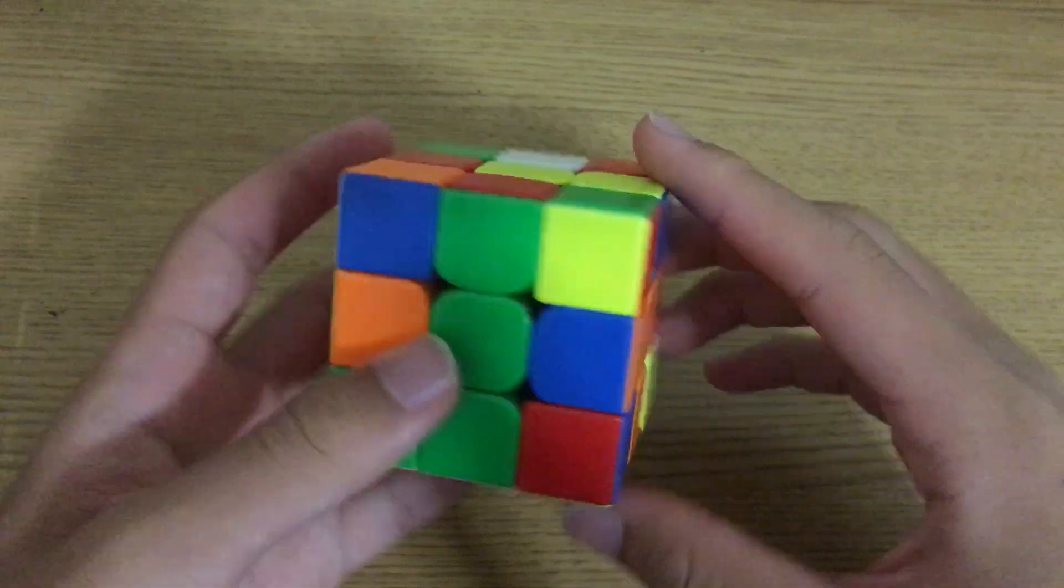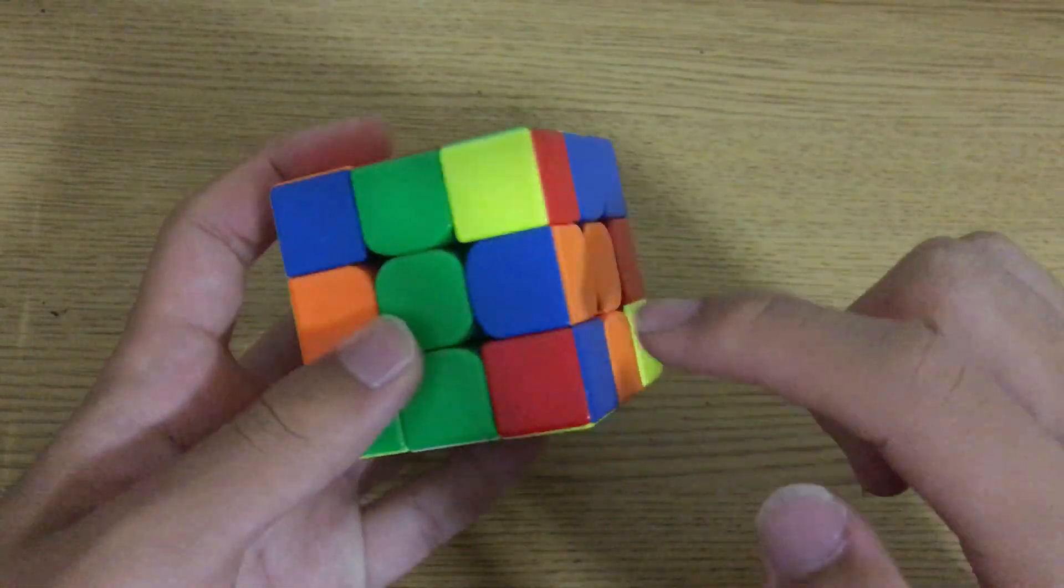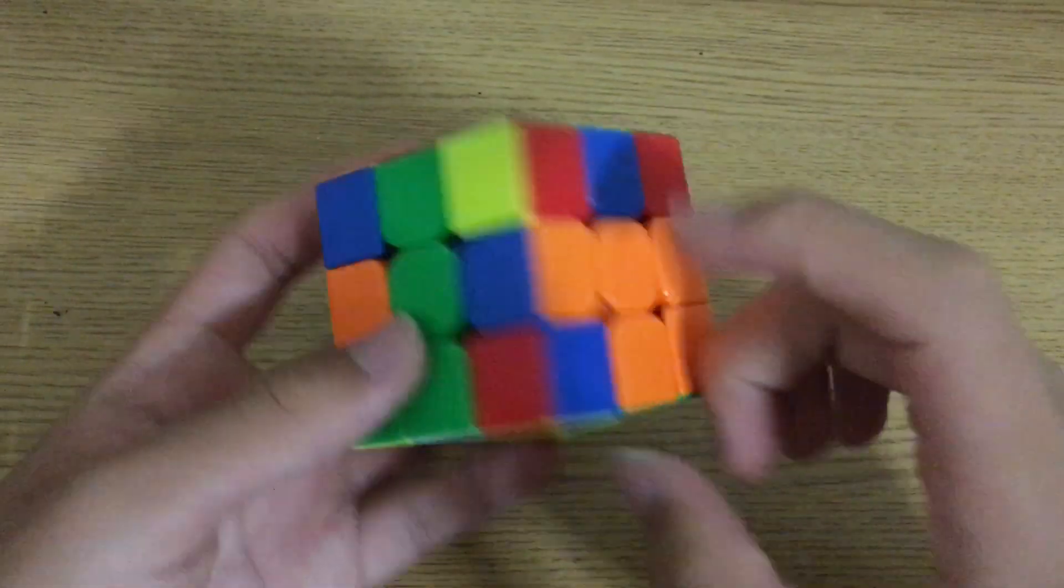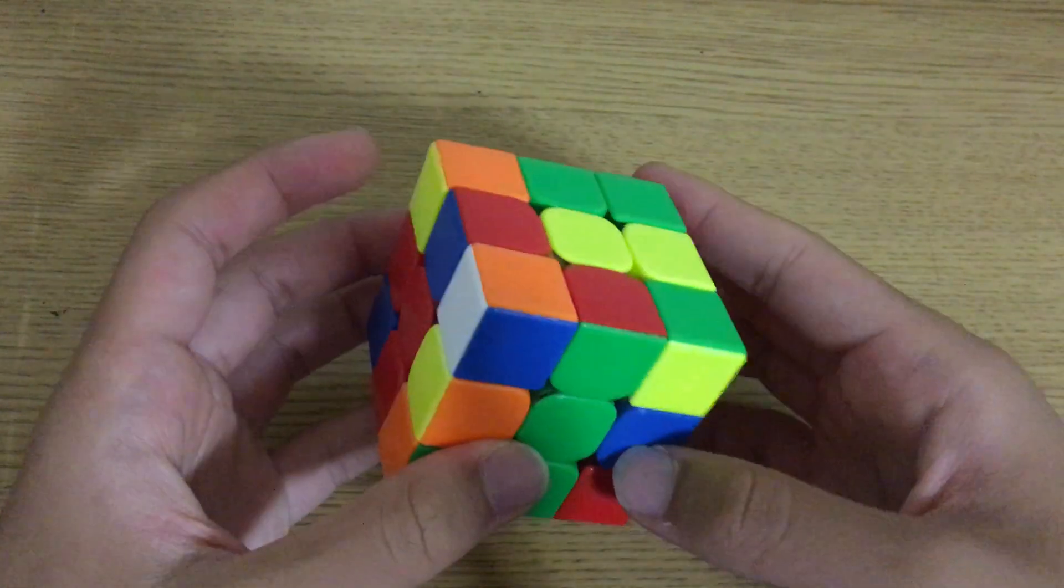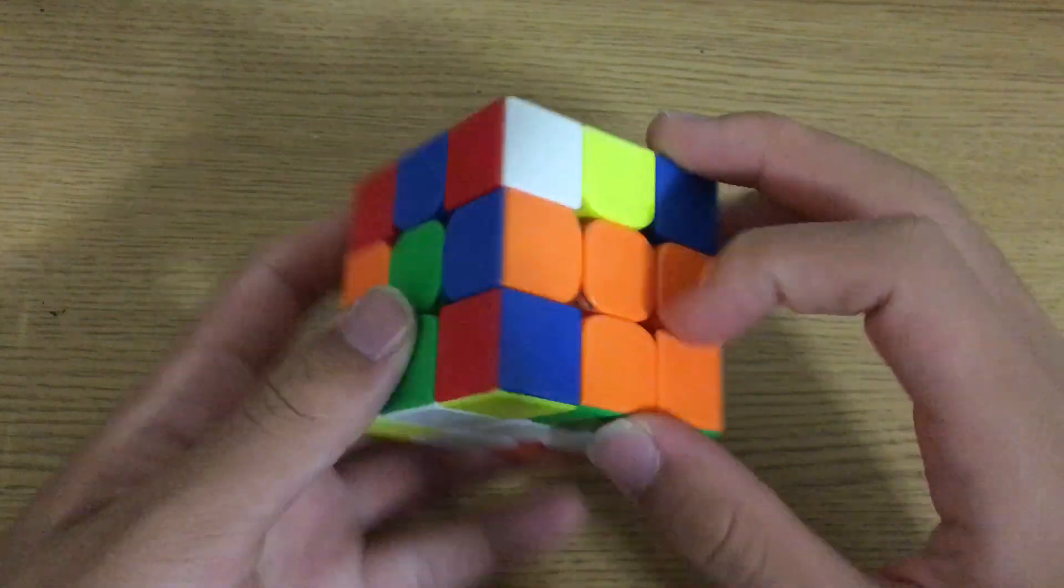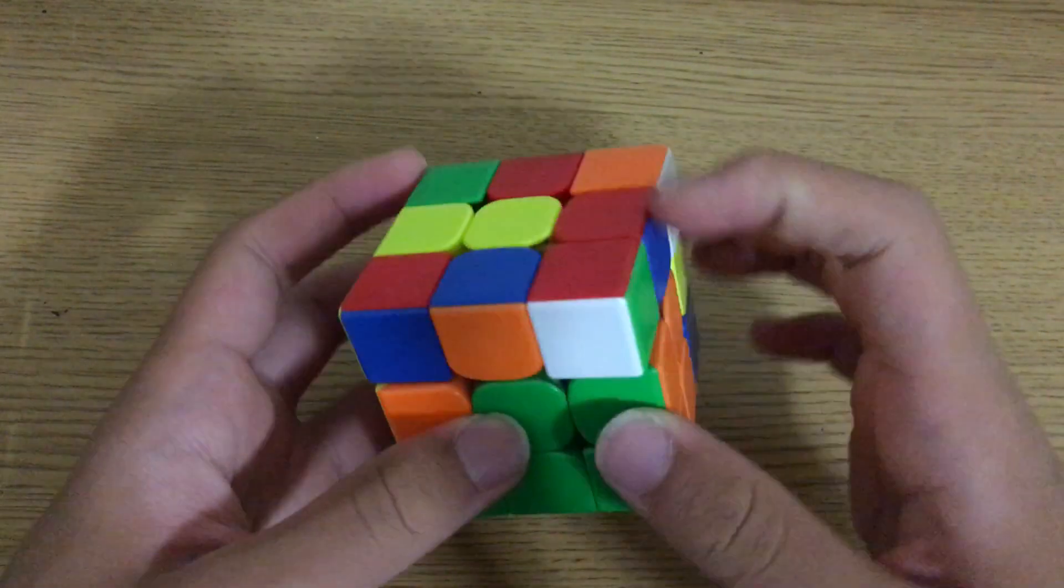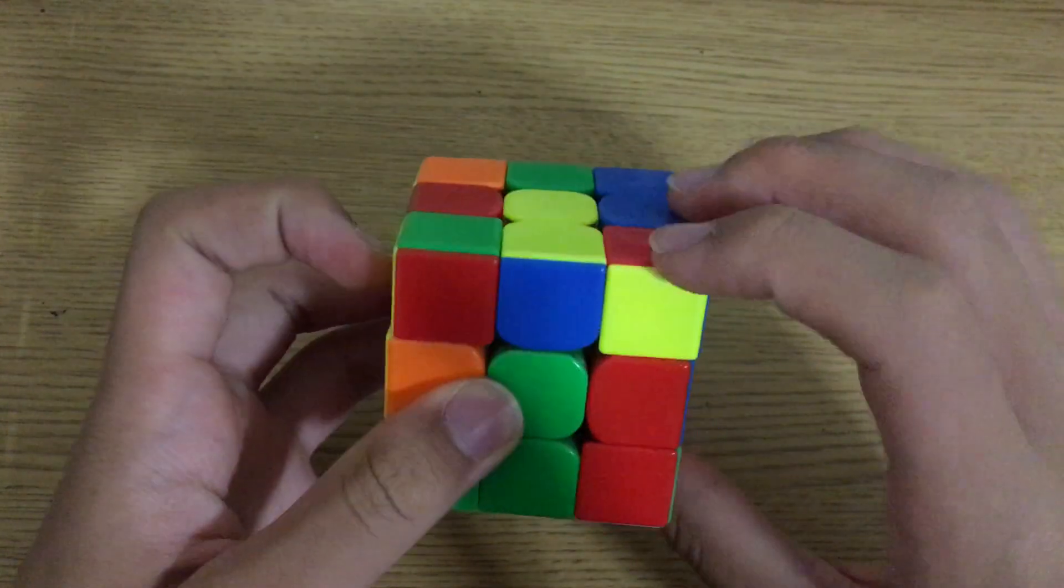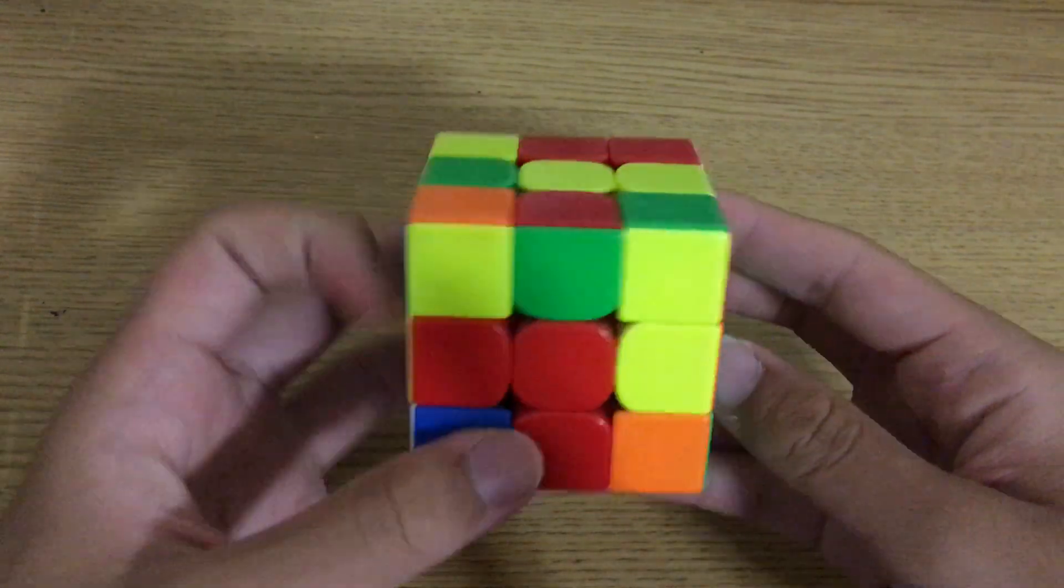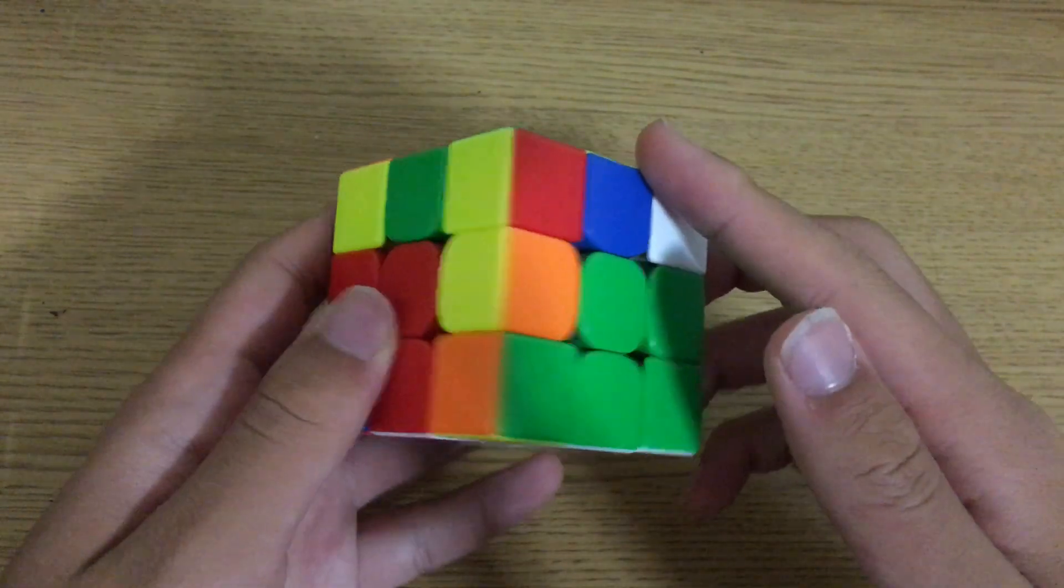Not only is this much better for execution, but he also notices this corner and this edge can actually be set up after we do B2. It can be set up with a U, and now when we bring up this edge while solving the X cross, we will have set up these two. So that was a very interesting and also very efficient planning. I think you guys should learn a lot from that first two pair solution.